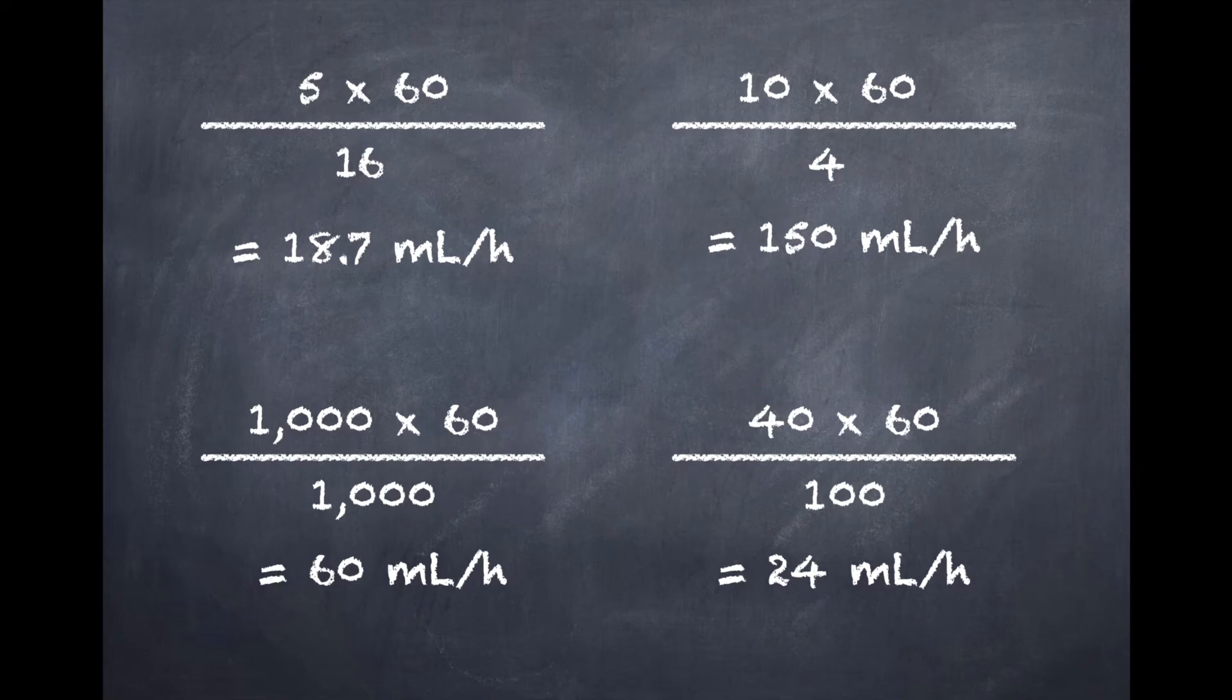So the reason I put that up there is to show you that you can use this calculation to do milligrams per minute as well. And you could even simplify it. You don't have to put it in thousand micrograms. You could just write one milligram times 60 divided by however many milligrams were in each milliliter.